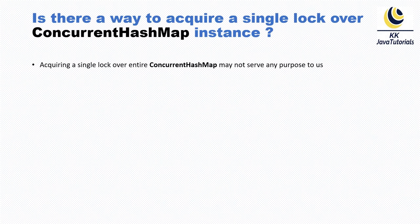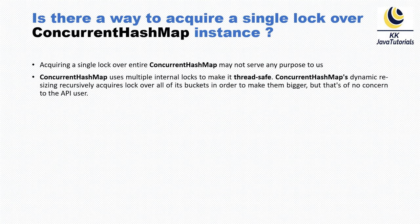First of all, you have to keep in mind that acquiring a single lock over the entire ConcurrentHashMap may not serve any purpose to us, because ConcurrentHashMap uses multiple internal locks to make it thread-safe. ConcurrentHashMap's dynamic resizing recursively acquires locks over all its buckets in order to make them bigger.